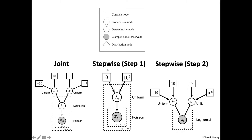Breaking this joint model up into two steps: in our first step, we have our data points which are Poisson distributed, and we use that data to infer our posteriors for the lambdas. Then in step two, we take an importance sample from each of those lambda posteriors inferred in step one and use that as data. We then use that data to infer the values of mu and sigma, which are our parameters of interest in this case.